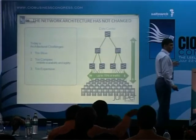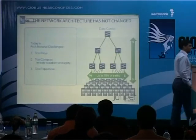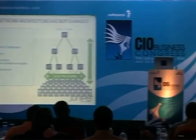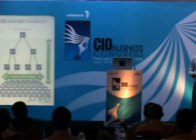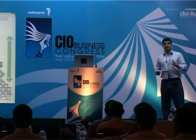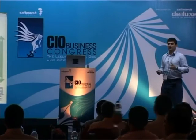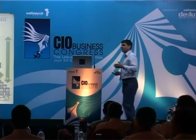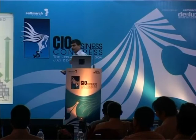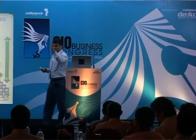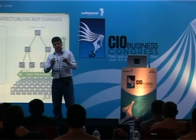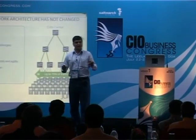While all this has changed, one thing that has not changed is the network architecture. It is still the same three-tier architecture that was designed for client-server traffic — designed for 95% of traffic between server and client, the north-south traffic. And today, the traffic is actually 75% east-west.